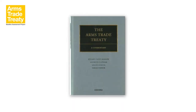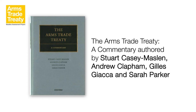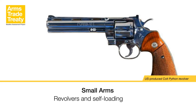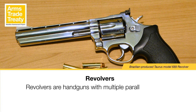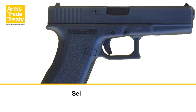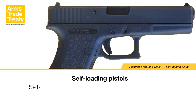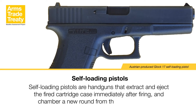UN and regional instruments do not provide descriptions or definitions for the subcategories of SALW contained in the ATT reporting form. The rest of this module introduces descriptions for these subcategories drawn from the Legal Commentary on the Arms Trade Treaty, authored by Stuart Casey Maslin, Andrew Clapham, Gilles Diaka and Sarah Parker. Revolvers are handguns with multiple parallel chambers within a cylinder that rotates to place each chamber in turn in line with the barrel. Self-Loading Pistols are handguns that extract and eject the fired cartridge case immediately after firing and chamber a new round from the gun's magazine.